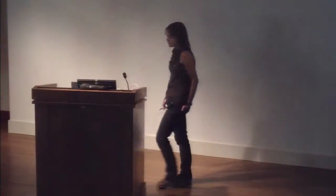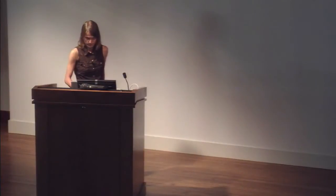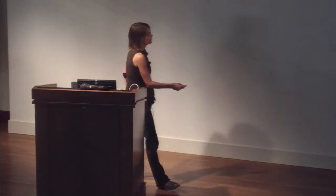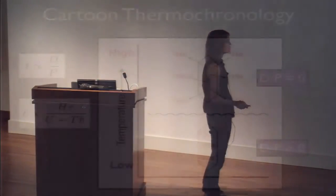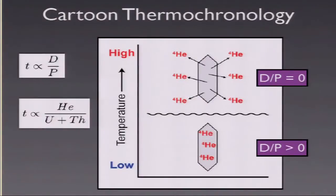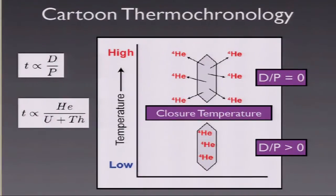So when you're up at high temperatures, you essentially have zero age. As you get to lower temperatures, you start accumulating daughter. This threshold temperature — where you go from complete helium loss to complete helium retention — is actually a zone of temperatures. This is known as the closure temperature, and this general concept applies to all these different thermochronometers.